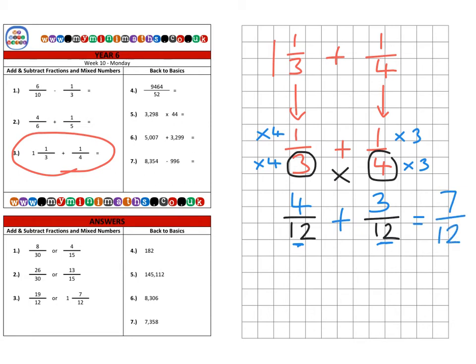Now because we've also got this whole number here, we need to bring that down. So we've got 1 whole plus that 7 twelfths, to give us a final answer of 1 and 7 over 12. 7 twelfths.